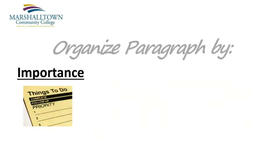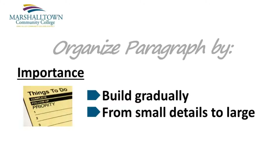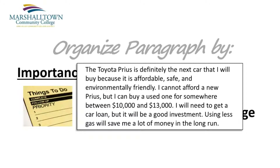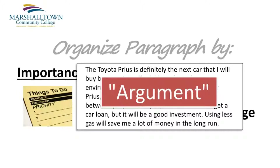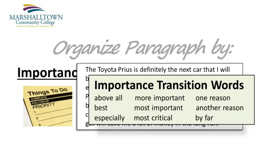When we organize by importance, we're talking about a paragraph that makes its point gradually, by starting with the smaller details first, and then building up to the most important detail at the end. Organizing your paragraph by importance is the perfect choice when writing to persuade or convince a reader to see your point of view. In writing and composition terms, this is called an argument. This type of paragraph also uses specific transition words to help the reader understand what the author is talking about, like above all, more important, one reason, and especially.